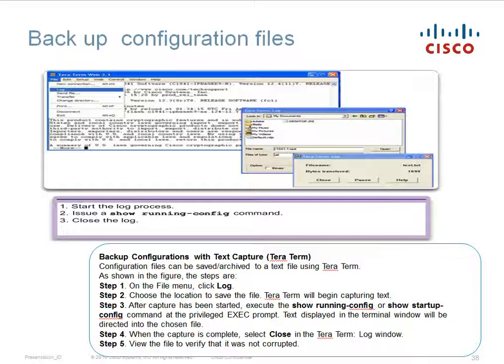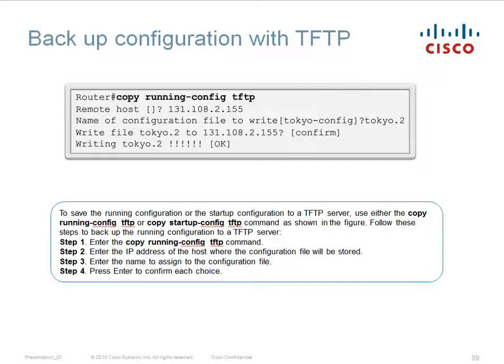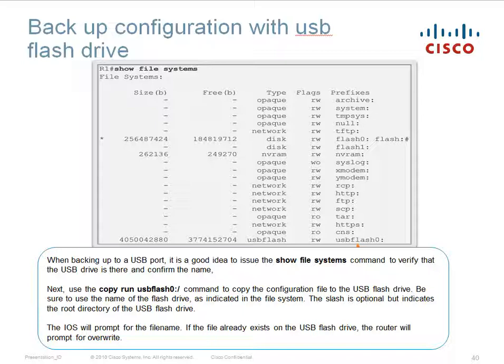Backup configuration files: to back up the configuration using text capture with TeraTerm, the steps are: Step 1 — on the file menu, click Log; Step 2 — choose the location to save the file; TeraTerm will begin capturing text. After capturing has started, execute the 'show running-config' or 'show startup-config' command at the privileged exec prompt. Text displayed in the terminal window will be directed into the chosen file. When the capture is complete, select Close in the TeraTerm log window, then view the file to verify it was not corrupted. You can also back up the configuration using TFTP following similar steps, or use a USB flash drive — use the 'show file system' command to verify the USB drive is present and confirm its name, then use the 'copy run usbflash:' command to copy the configuration file to the USB drive. The slash is optional but indicates the root directory of the flash drive.